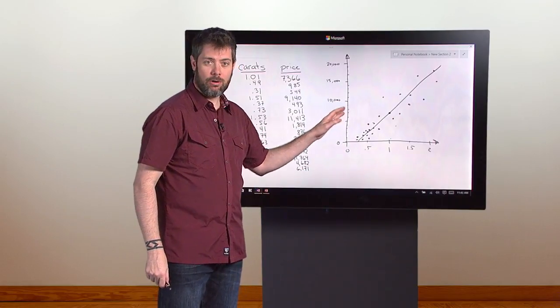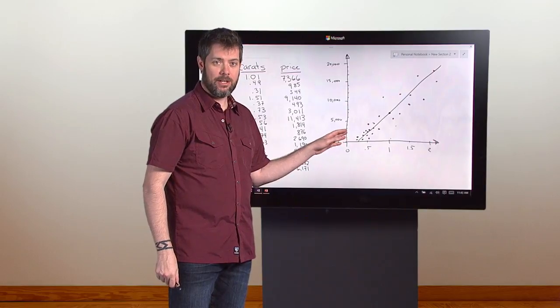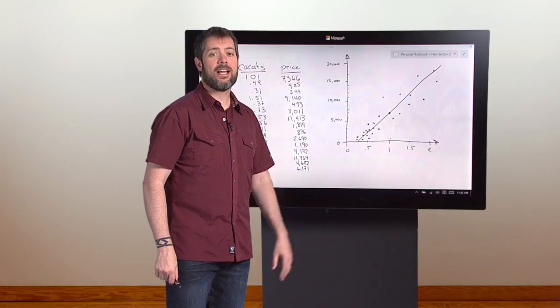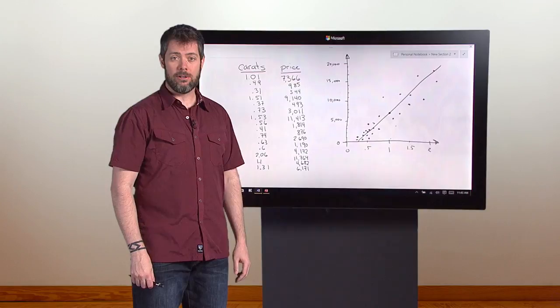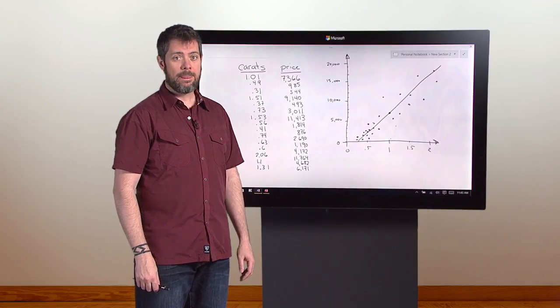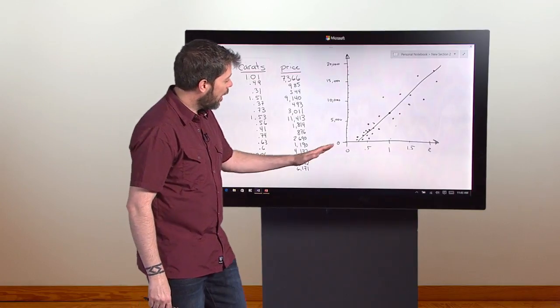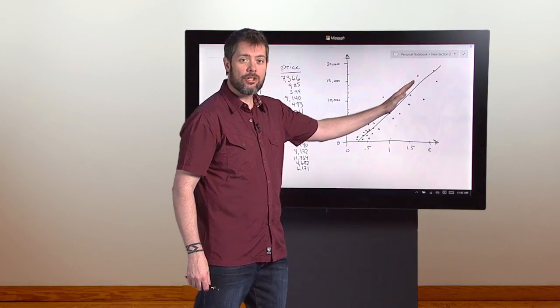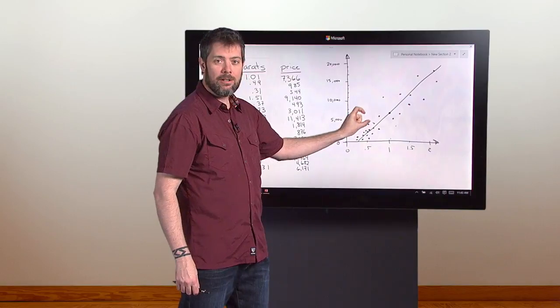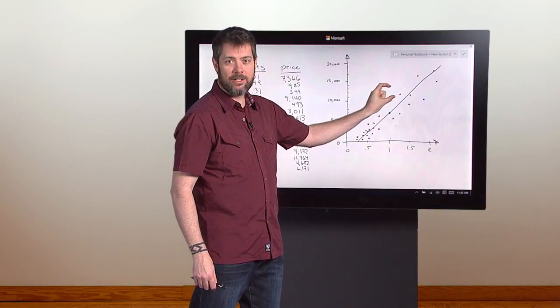The fact that all the dots don't go exactly through the line is okay. Data scientists explain this by saying that there's the model, that's the line, and then each dot has some noise or variance associated with it. There's the underlying perfect relationship, and then there's the gritty real world that adds noise and uncertainty.